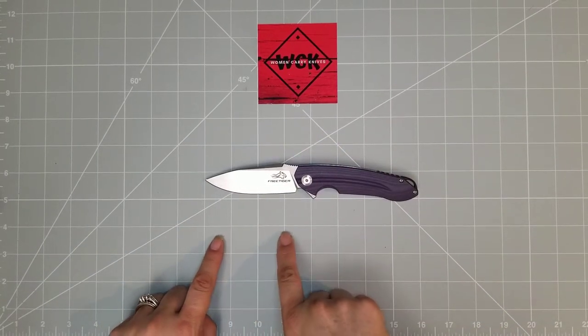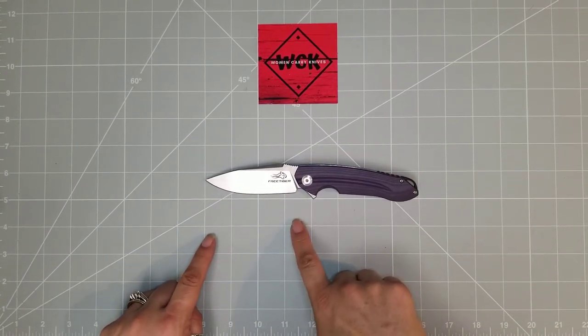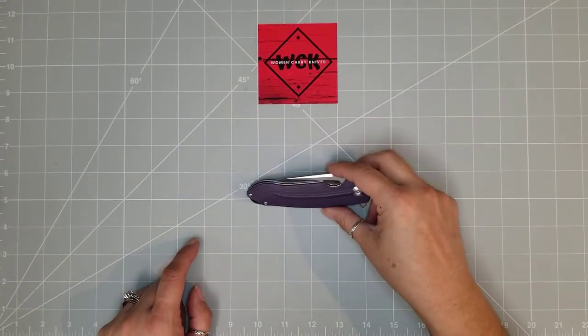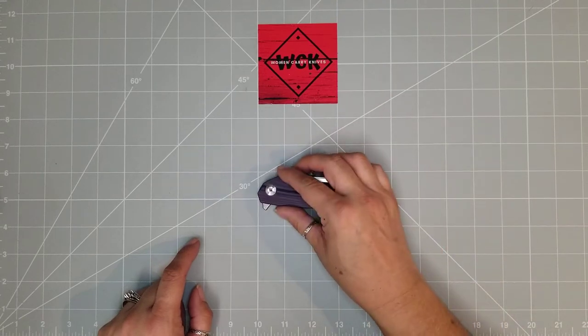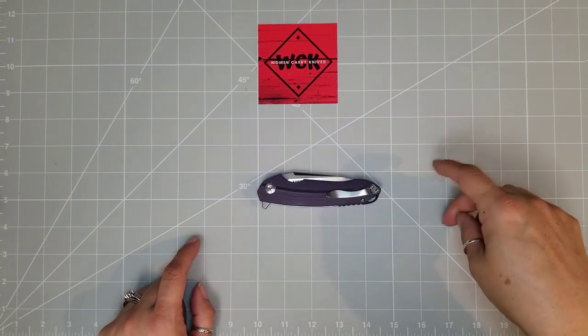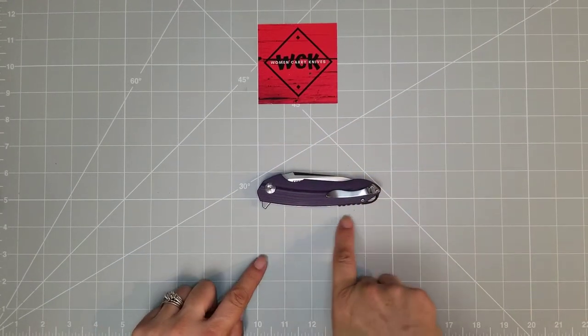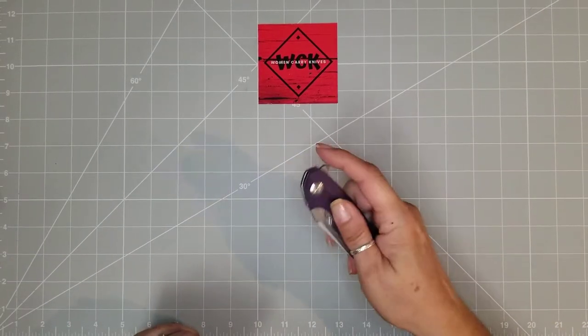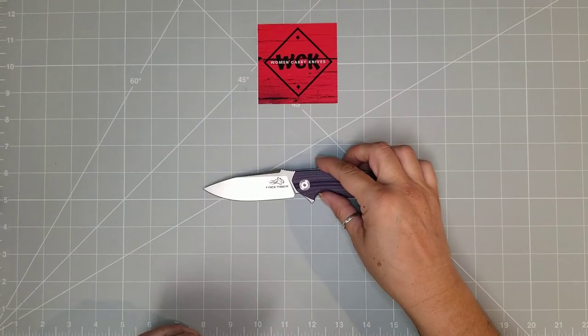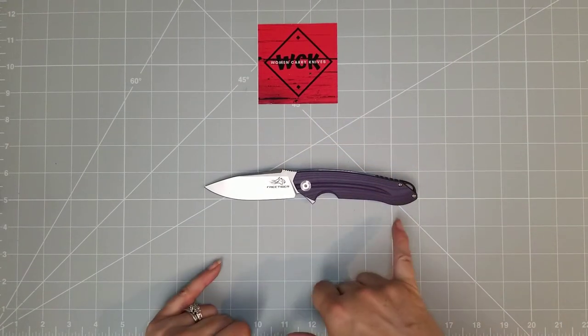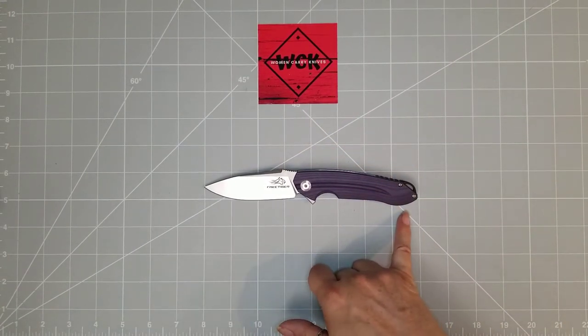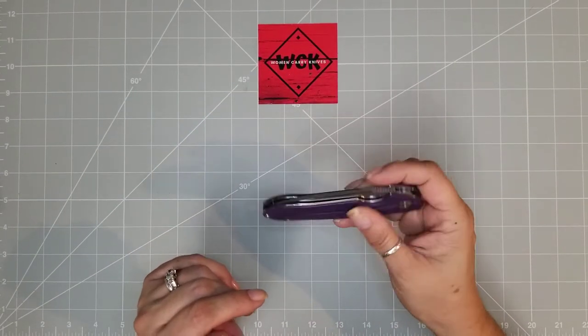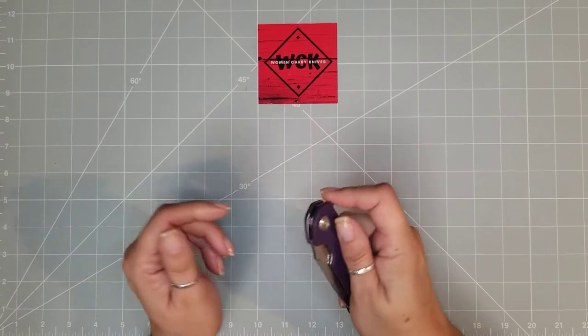All right. So, you are looking at a three and a half inch blade. Just over three and a half inches. Your handle length or your closed length, your closed length is about four and a half inches. Your overall length is just over seven and three quarters. So, you're looking at just about eight inches. The weight on this is four ounces. It's actually 4.05, so just over four ounces.